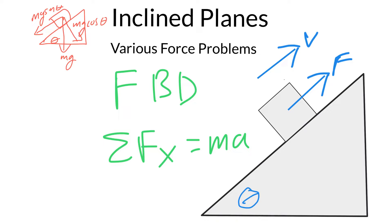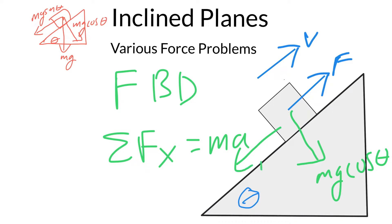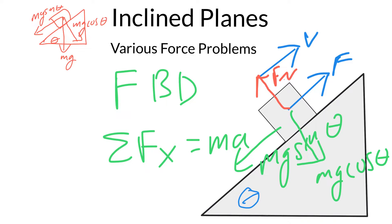Let's do our free body diagram first, attaching the forces we just discussed. The gravity component perpendicular to the ramp is mg cosine theta, and the component along the ramp is mg sine theta. We also have an applied force going up the ramp, a normal force the ramp pushes back with, and lastly friction — which acts in the downward-ramp direction since the block is moving up.